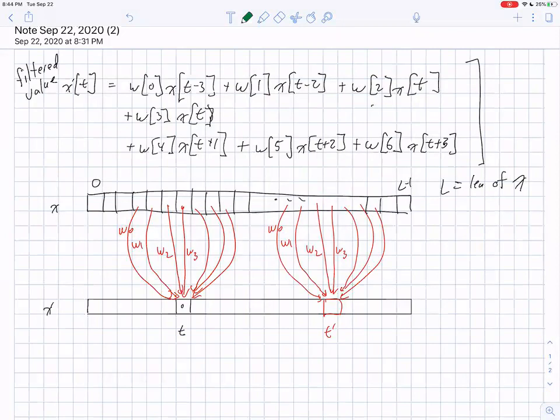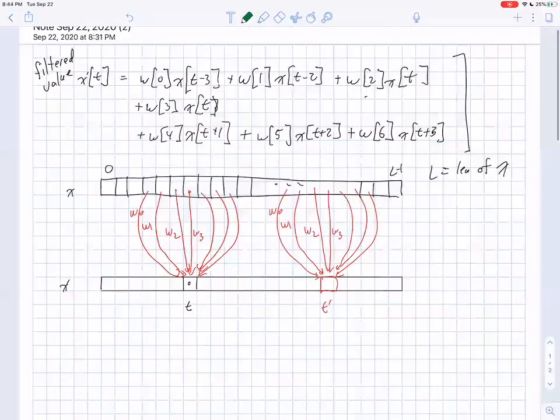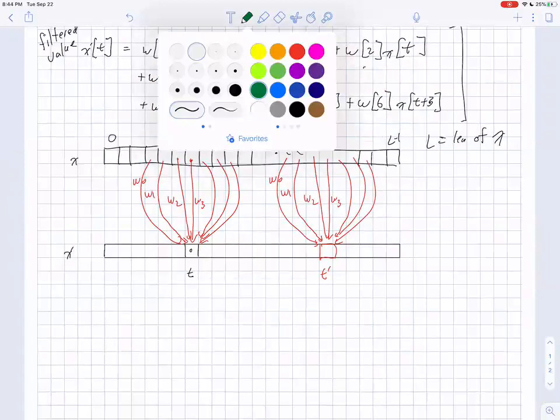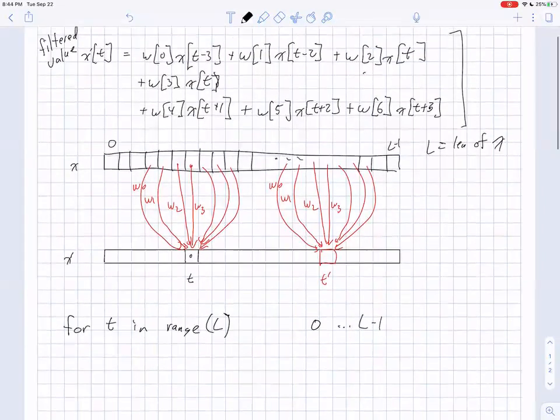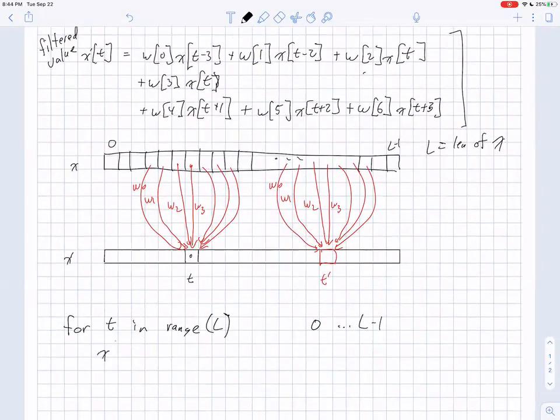And so the question is, how do we actually compute this generally? There are a couple of ways to do this. One could imagine writing a for loop where you say something along the lines of for T in range L. So that's going to give you values from zero to L minus one. And then we can compute exactly what we've written out here. So X prime of T equals, etc. So that's one possible approach.